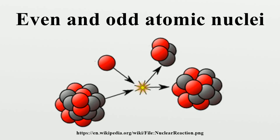Odd-proton even-neutron: These 48 stable nuclides, stabilized by their even numbers of paired neutrons, form most of the stable isotopes of the odd-numbered elements. There are 41 odd-numbered elements with Z = 1 through 81, of which 30 have 1 stable odd-even isotope. The elements technetium and promethium have no stable isotopes, and 9 elements — chlorine, potassium, copper, gallium, bromine, silver, antimony, iridium, and thallium — have 2 odd-even stable isotopes each, making a total of 48 stable odd-even isotopes.